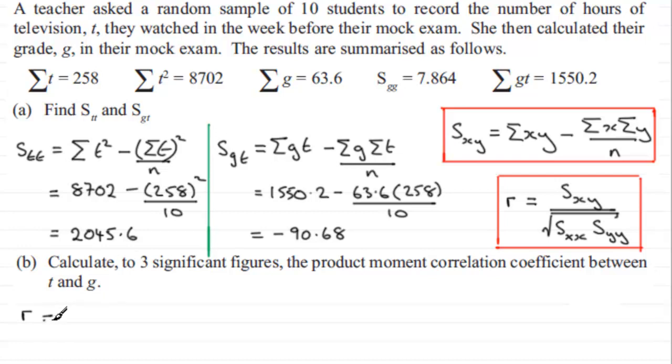And how do we use this now in our question? Well, we're trying to work out that product moment correlation coefficient r, and it's going to be equal to what would have been sxy, but again we're just replacing the x with say t and the y with g, or the other way around it doesn't make any difference. So what we're going to have here is sgt all divided by the square root of sgg multiplied by stt.